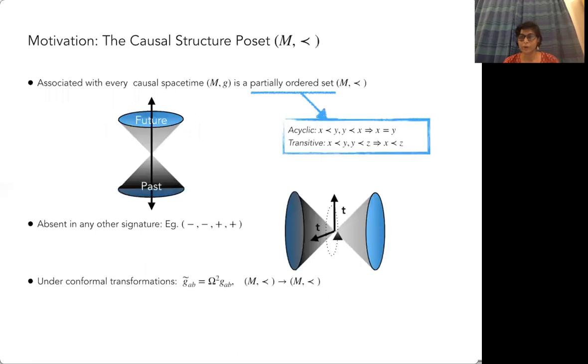Let me begin from the motivation behind causal set theory. Associated with every Lorentzian spacetime is a causal structure POSET, a partially ordered set where this ordering relation is acyclic and transitive. It is absent in any other signature. Riemannian geometries don't have causal structures, and causal structure POSETs are very much a signature of this minus plus plus plus Lorentzian spacetime.